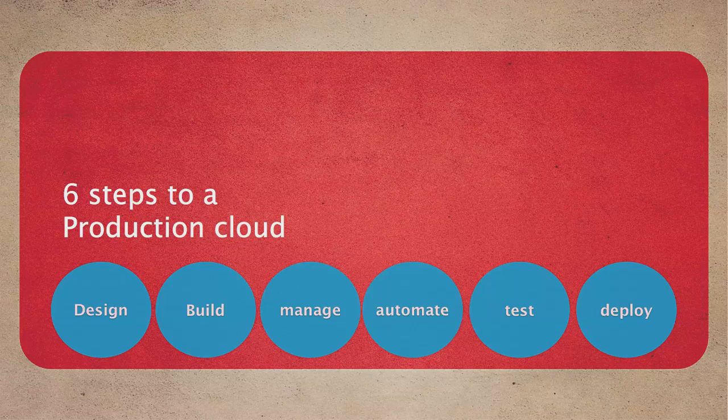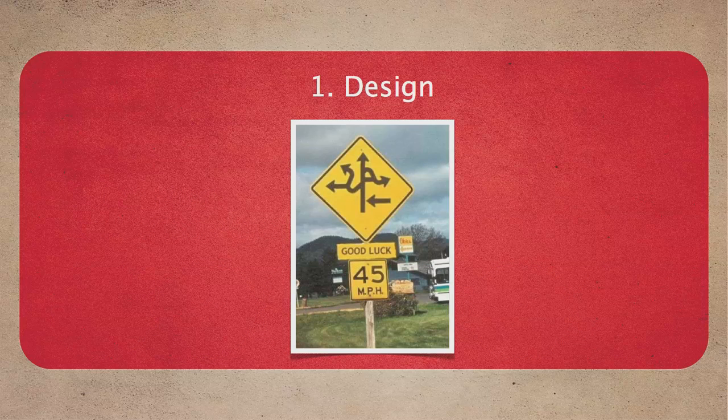So I want to talk about the six steps we use for building production clouds: design, build, manage, automate, test, and deploy. Step one is design — not all clouds are created equal. It's really figuring out what's the purpose of this cloud. What are you doing? What is this for? What are the apps doing? What are the users doing with these apps? Figuring out what type of workloads this cloud is going to be used for.